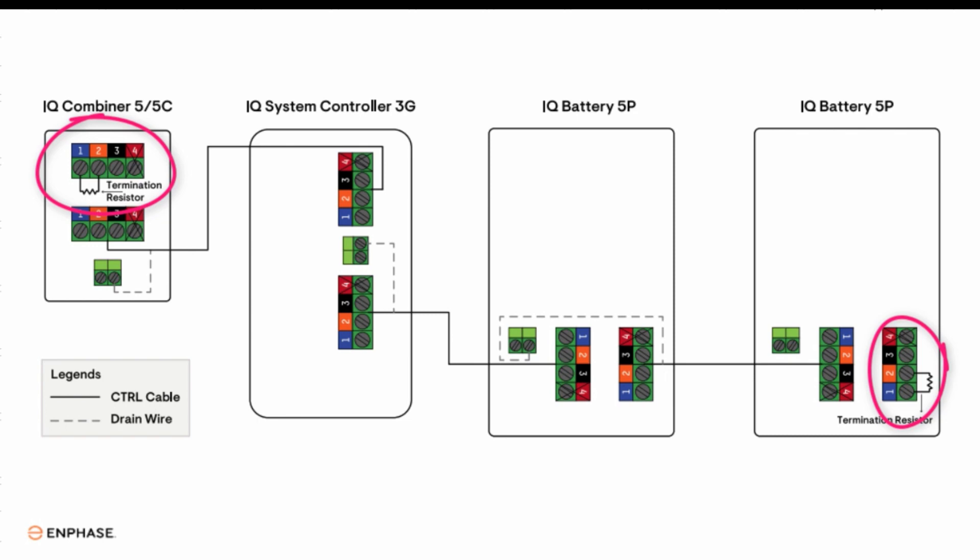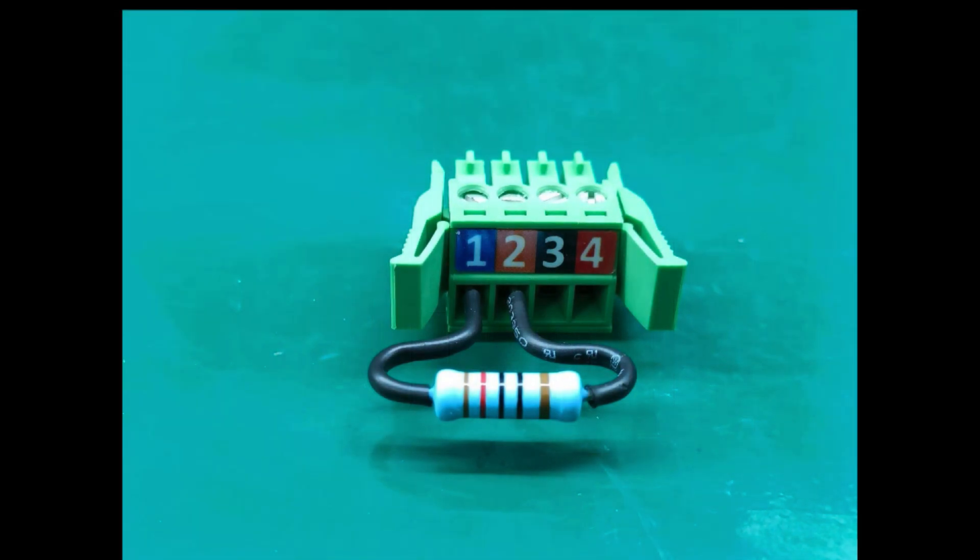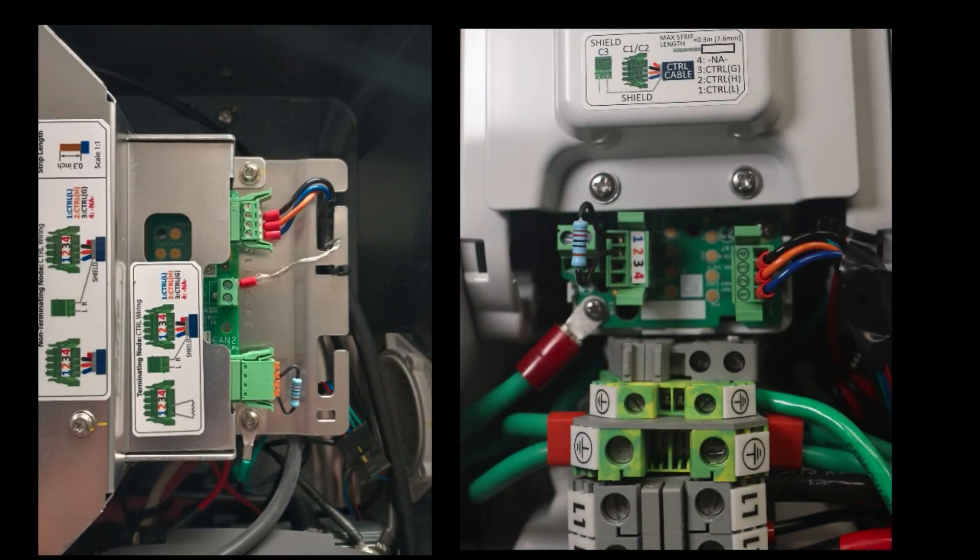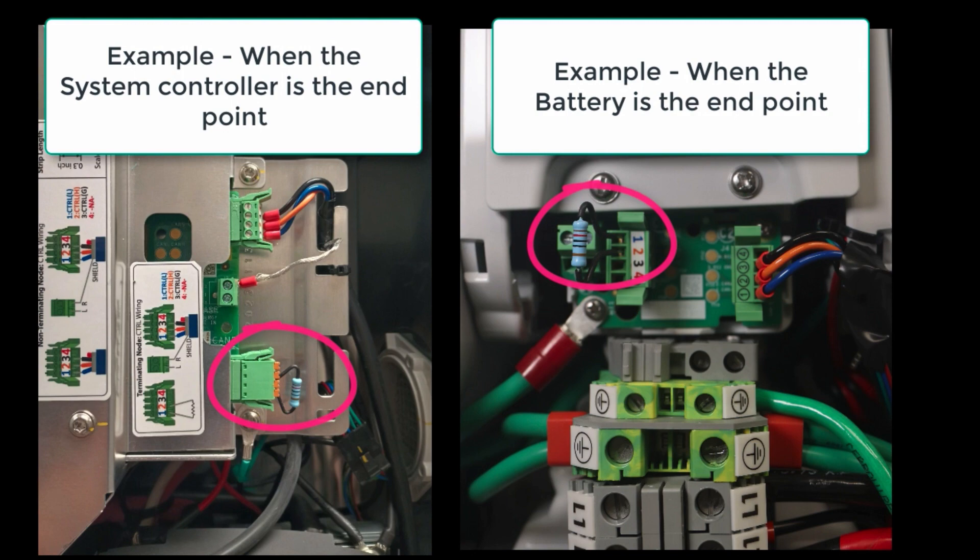Each endpoint device must have a termination resistor installed, wired between pin 1 and pin 2 of the wiring header. The header is then installed on the open control cable ports at the endpoint devices. Don't lose the termination resistor. It's included in the components but packaged separately.